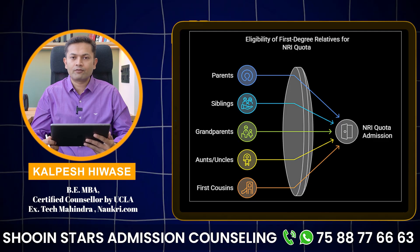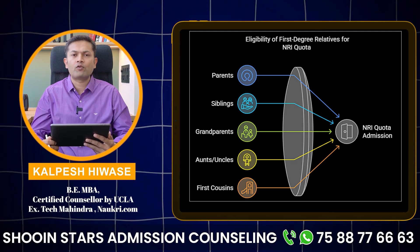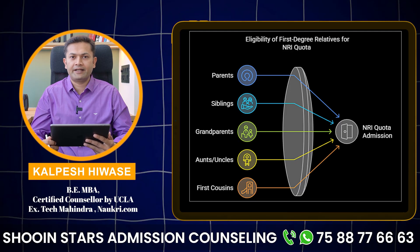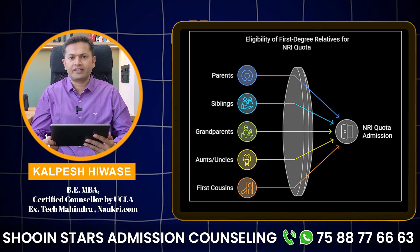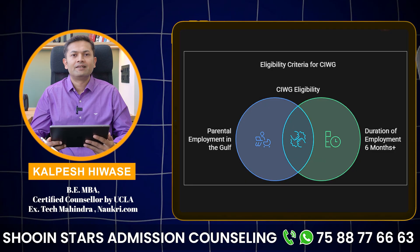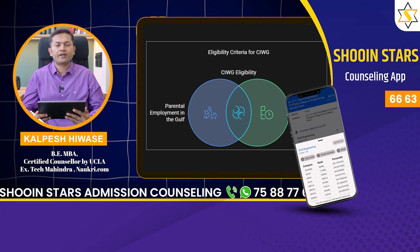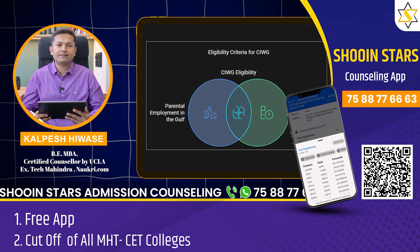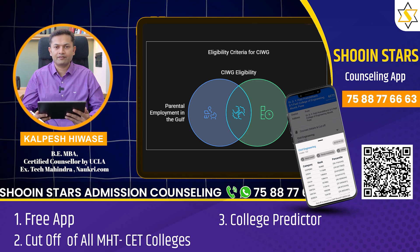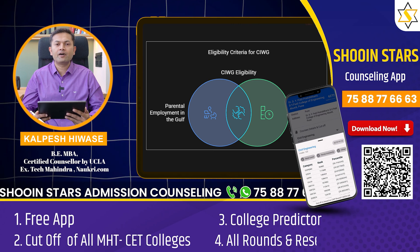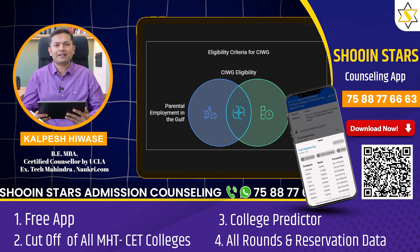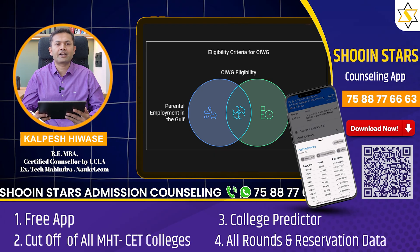They need to give you a lot of documents, which we have already covered in different videos. Now this was about NRI. We will also see about CIWG. CIWG stands for Children of Indian Workers in Gulf, and by that it means that either of your parents should be in the Gulf and should be working there for more than 6 months — by that you become eligible under the CIWG category.